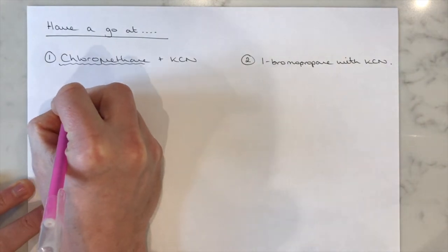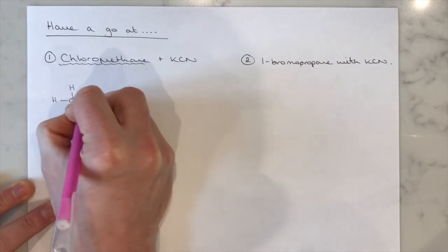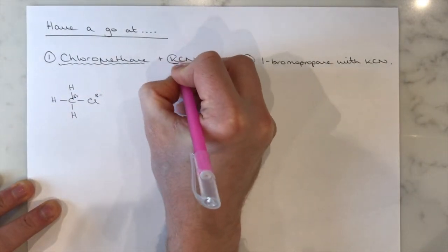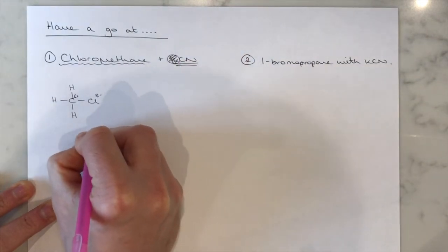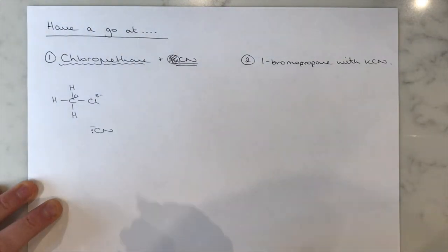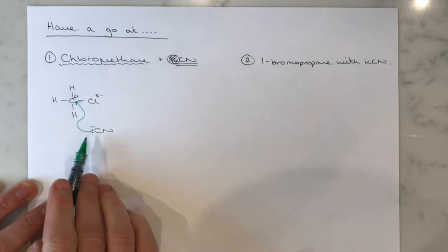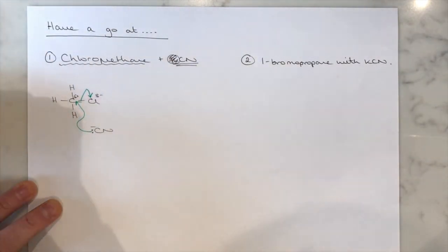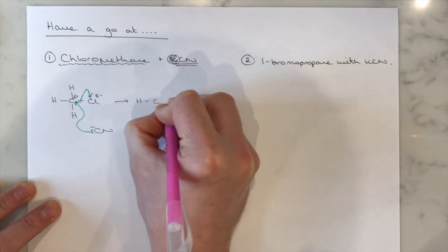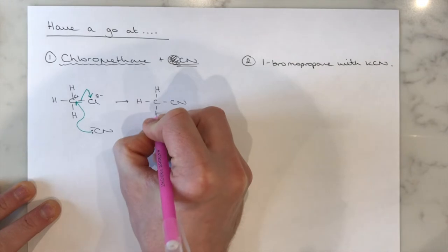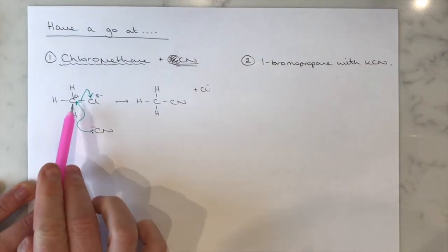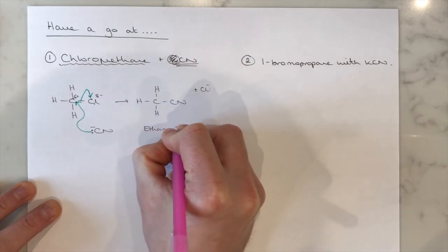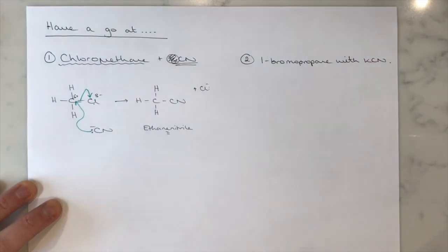If starting with chloromethane — meth means one carbon — we have δ− on the chlorine and δ+ on the carbon. Potassium cyanide: forget the potassium, we're just dealing with CN⁻ with a negative charge and lone pair on the carbon. First curly arrow from the lone pair to that slightly positive carbon, then we break the carbon-chlorine bond. That results in the formation of our product, with a chloride ion floating off. We've gone from chloromethane to ethanenitrile — two carbons, with the E in that gap.